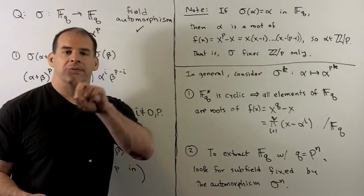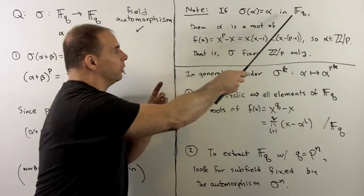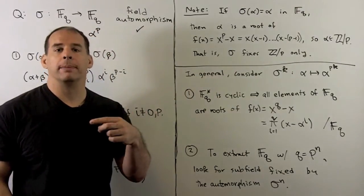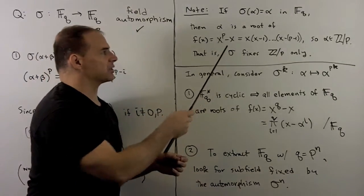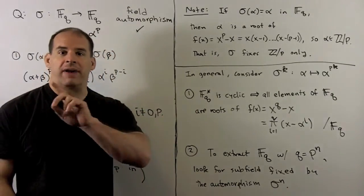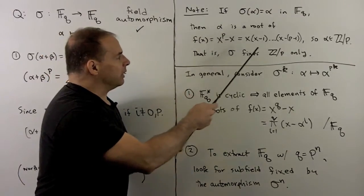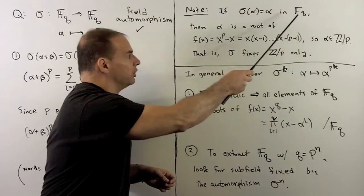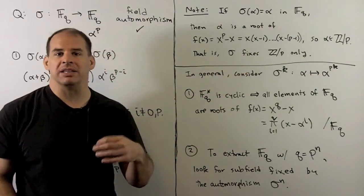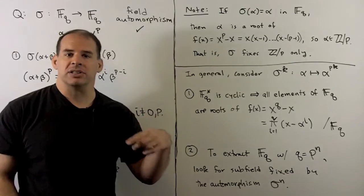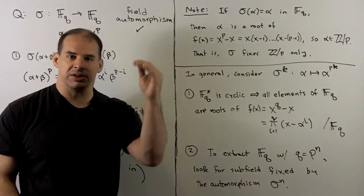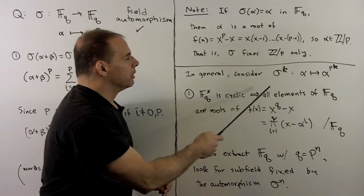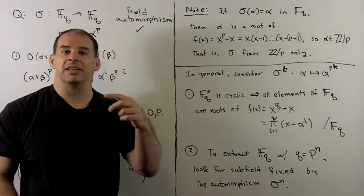Now, what are fixed fields under sigma? Well, if we're in F_q, we assume sigma of alpha equals alpha. Then we're going to have alpha to the p equals alpha, or alpha is a root of x to the p minus x. We already know how to factor that, it factors over Z mod p. So that's going to mean alpha has to be one of 0, 1, 2, up through p minus 1. It has to be in the Z mod p inside of F_q. So that means the fixed field is just going to be Z mod p. Now, that doesn't seem very interesting if we're looking for these intermediate fields, these subfields. What we do instead, we're going to consider powers of sigma.